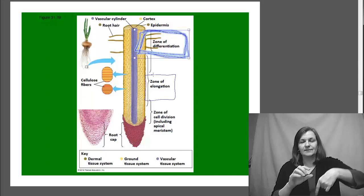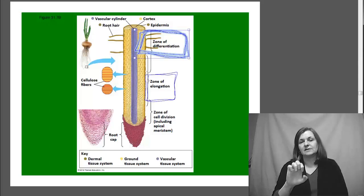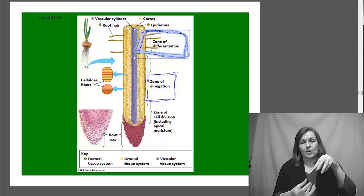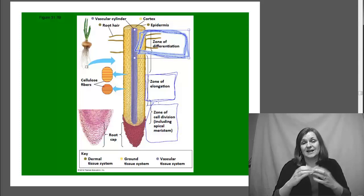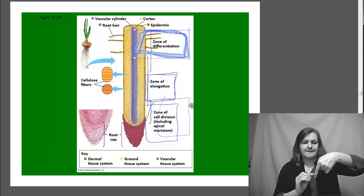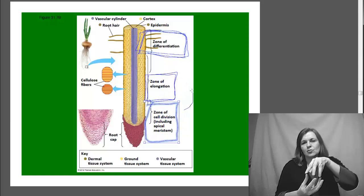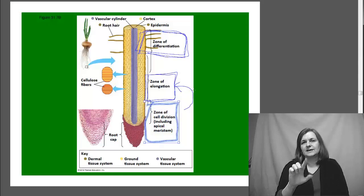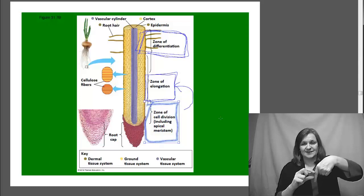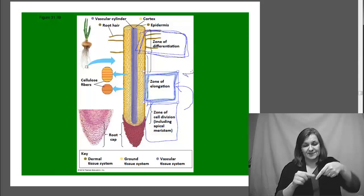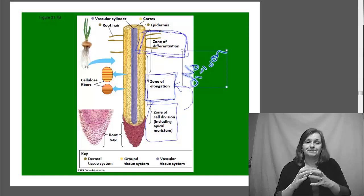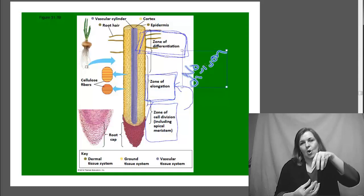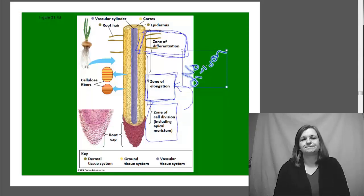The zone of elongation is where we see these root cells actually growing. So the cells are divided very, very quickly in the zone of cell division, high metabolic activity, very quick division. Then they take time, slow down, and actually grow in the zone of elongation. Now, they're not going to divide anymore. There is no division associated with the zone of elongation. This is simply where we'll have the plant cells go through this elongation process. So the cells are simply getting bigger.